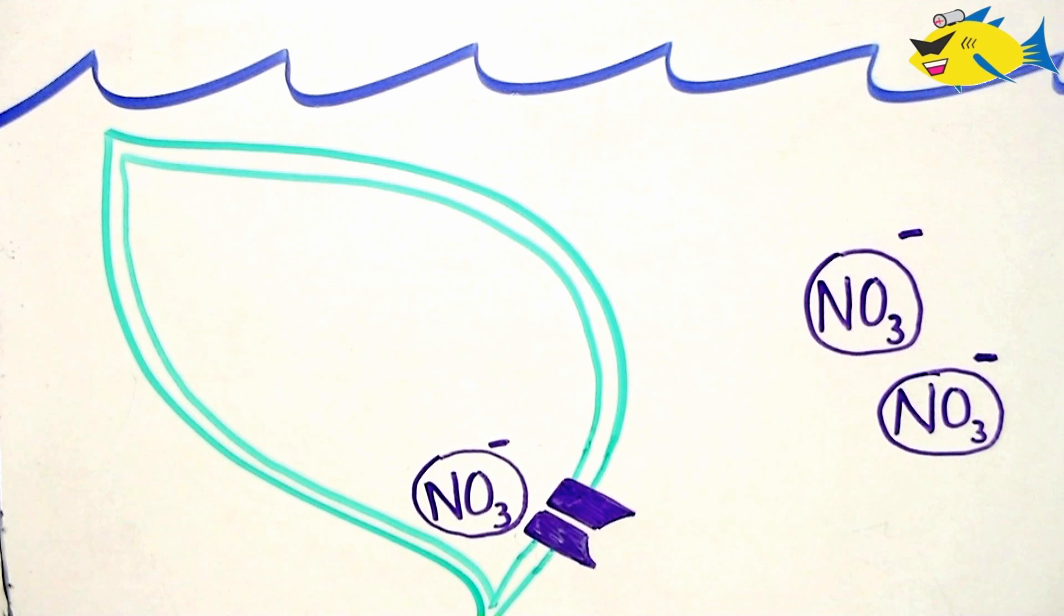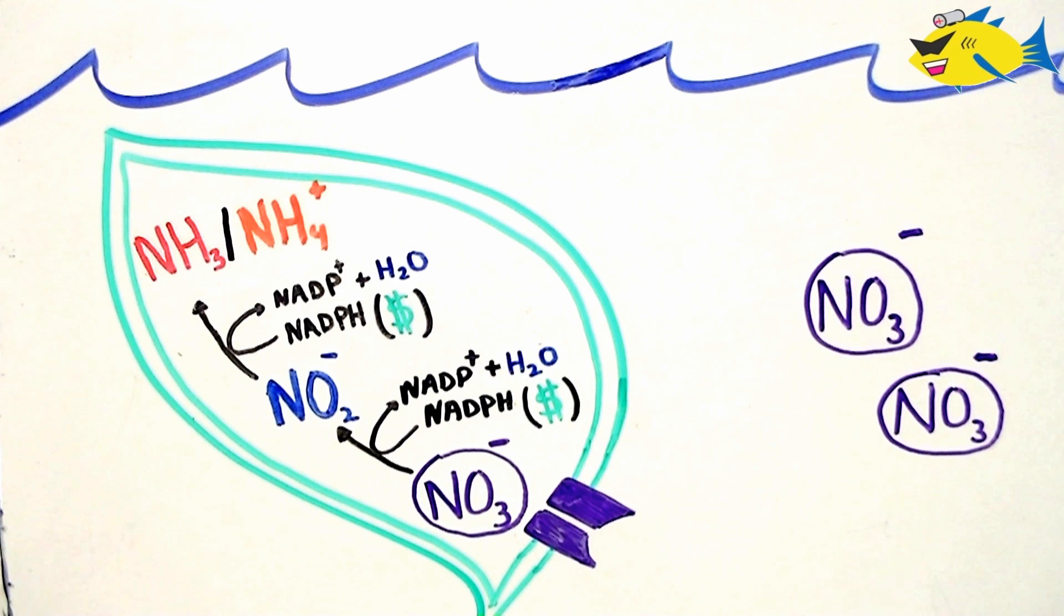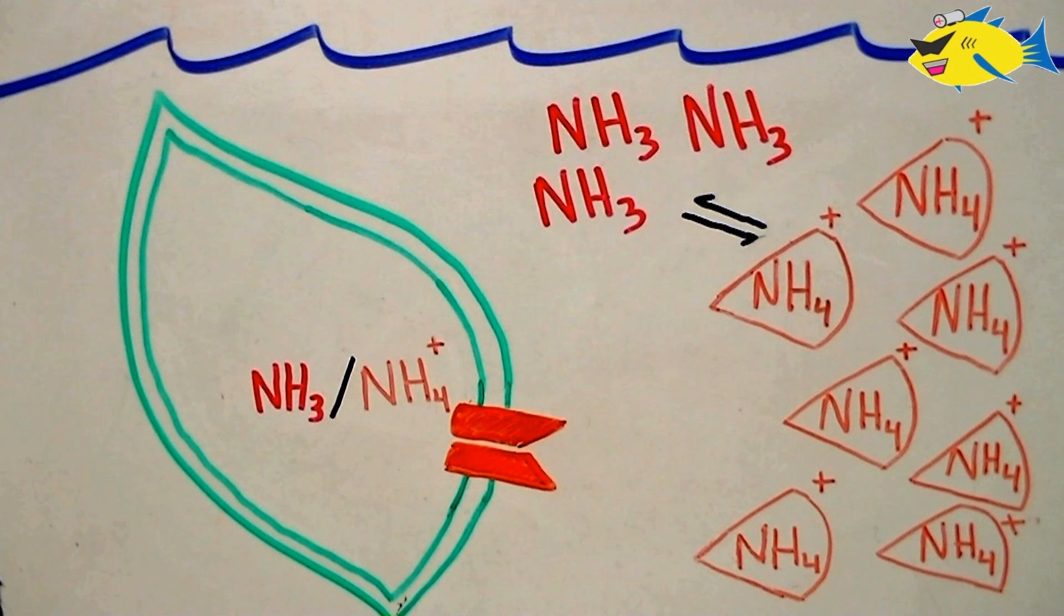To review, nitrate is a negatively charged compound and its uptake is regulated by the plant. It must be biochemically reduced once inside, costing the plant energy. Ammonium uptake is regulated and does not cost the plant any additional energy, therefore being a better option.